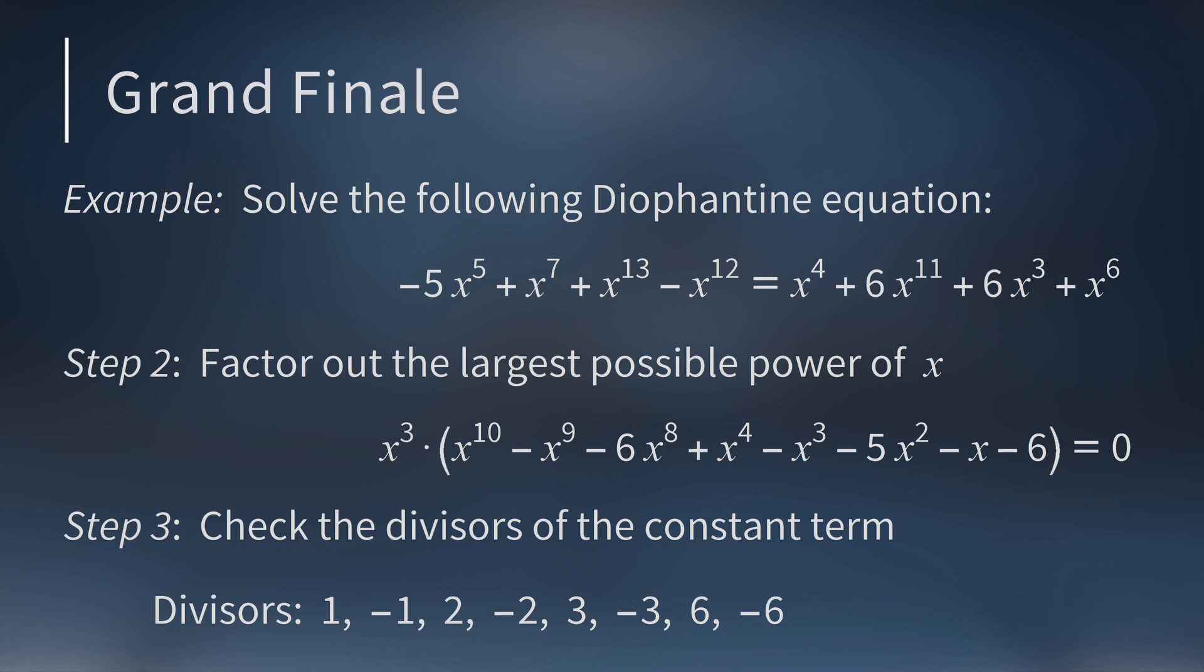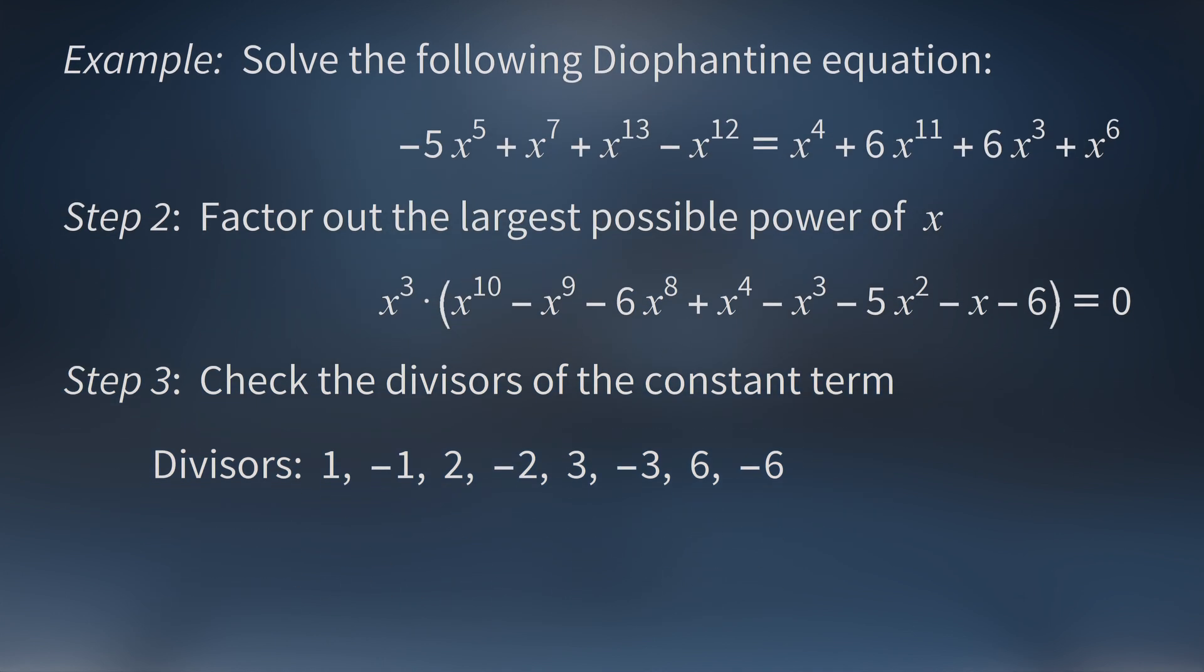three, negative three, and six, negative six. If you plug these eight numbers into the second factor, you get these eight values. The second factor is zero when x equals negative two or x equals three. So the solutions to the Diophantine equation are x equals zero, negative two, and three.